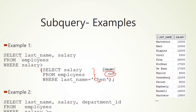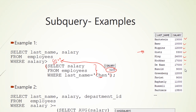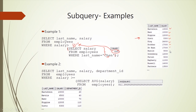So 8200 is the salary of employee Chin. The outer query then uses that output: SELECT last_name, salary FROM employees WHERE salary > 8200. The final result shows all employees whose salary is greater than 8200.